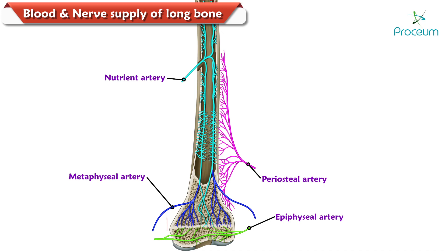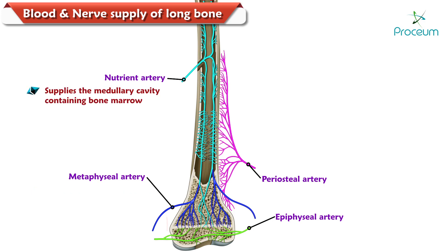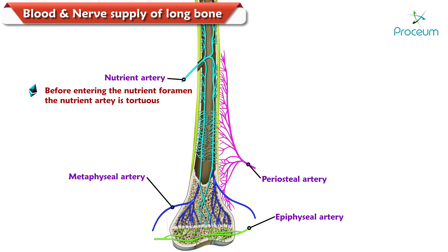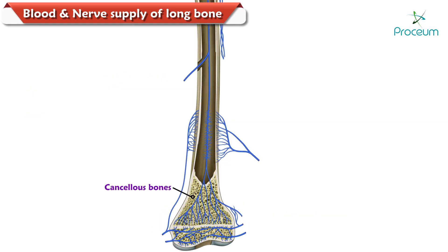These loops anastomose with epiphyseal, metaphyseal (also known as juxta-epiphyseal), and periosteal arteries. Thus the metaphysis is the most vascular zone of the long bone. The nutrient artery supplies the medullary cavity containing bone marrow and the inner two-thirds of the outer shell of compact bone of the diaphysis and metaphysis. Before entering the nutrient foramen, the nutrient artery is tortuous so that it is not affected during movements.